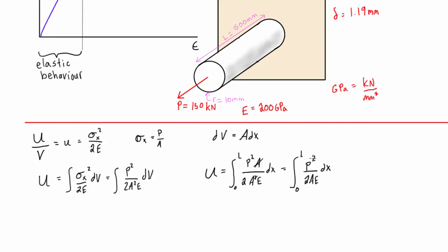Now all of this stuff is constant, because it's just given to us in the problem. So we can bring that to the outside of the integral. So we have P squared over 2AE times that integral from zero to L dx, and then clearly this just becomes, let's maybe write it down here.